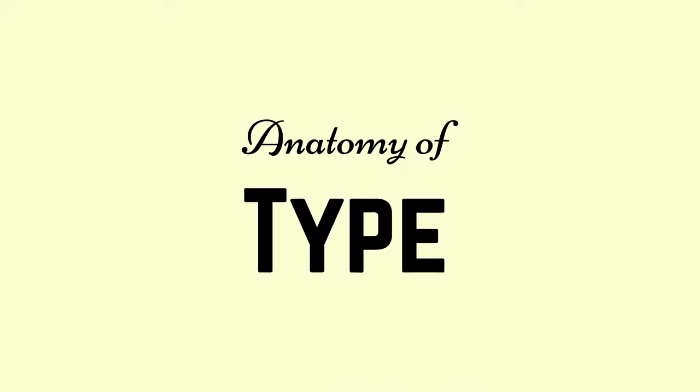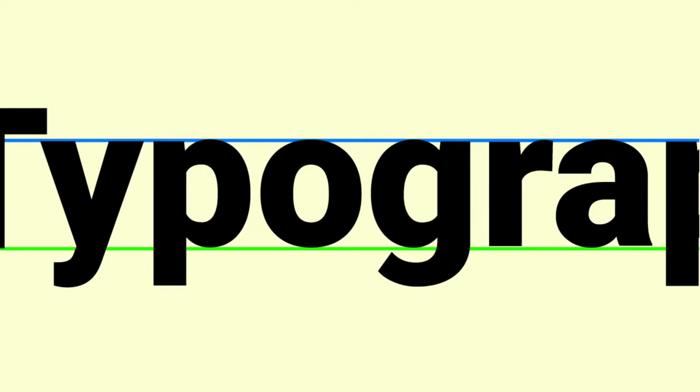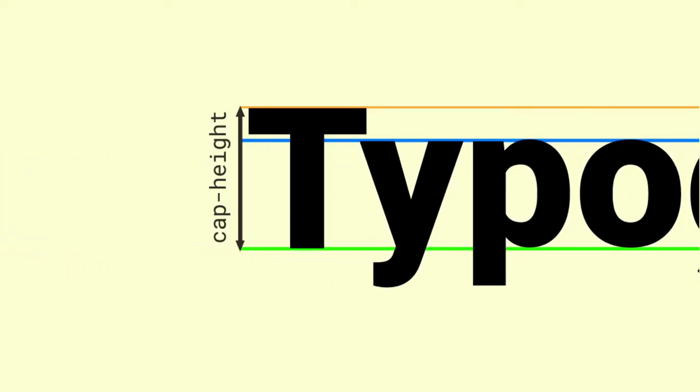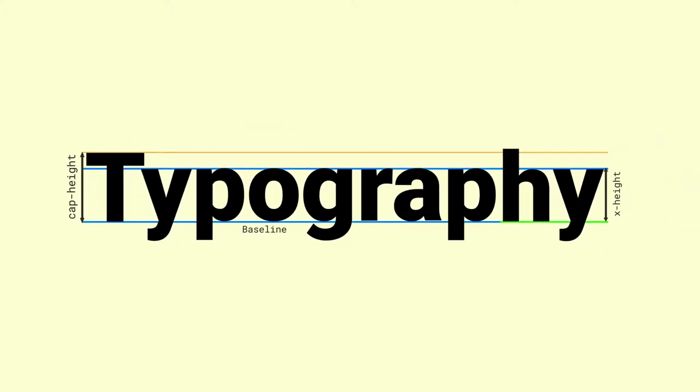To select a typeface, we need to know about the anatomy of type. Let's see them one by one. X-height is the height of the lowercase letter X and is usually the height of all lowercase letters. While cap height is the height of an uppercase letter. Baseline is the line on top of which all these letters sit.